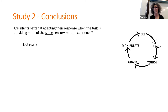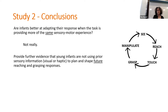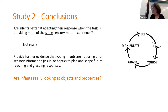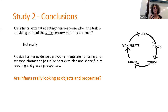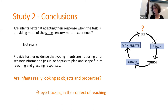This data provided further evidence that young infants are not using prior sensory information very well to plan and shape their future reaching and grasping responses. That led us to the next question: maybe I should look at the beginning of the cycle. Are they really paying attention to object properties? Maybe they're not looking at them very well, and the touch isn't very good, so there isn't very good integration. That led to a completely different line of research involving eye tracking, because I wanted insight into what those babies would pay attention to.